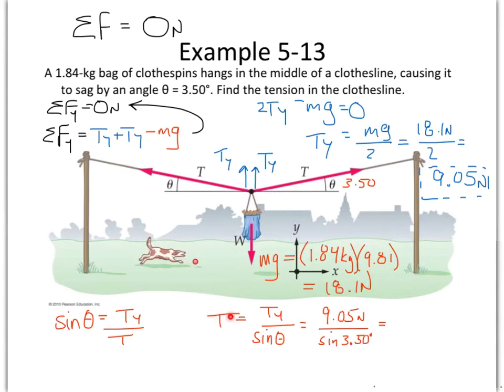And so since we're dividing by a very small value, that means that tension is going to have to be a very big tension to create just barely enough vertical force to balance out that bag of clothespins. So 9.05 divided by the sine of 3.5, that is a big number, 148 newtons, and that's our final answer. So you must create a lot of tension in this very shallow sloping line in order for the Y component of that tension to be enough to balance out the weight of that bag of clothespins right there.